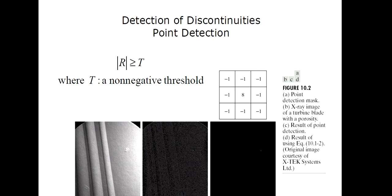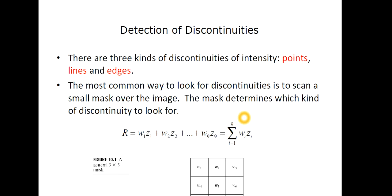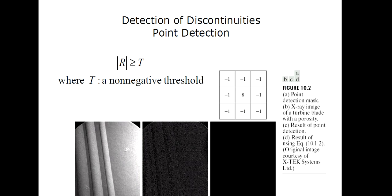Now, detection of discontinuities, that is point detection. If R is greater than T, and T is kind of non-negative threshold, then you see the first one is the point detection mask. We have an x-ray image of a turbine blade with a porosity, and then results of the point detection, and then result using this equation that we have just used. So that is the point detection.